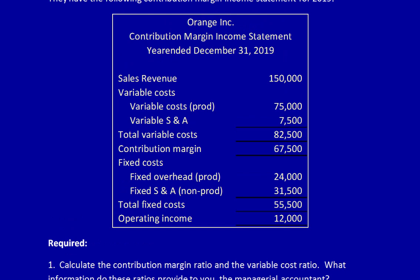When we're calculating ratios, we always use sales revenue as the denominator. Therefore, if I want the percentage of sales revenue in comparison to sales revenue, I would take 150,000 divided by 150,000 and multiply it times 100% to get the percentage, which is 100%. I need to calculate the Contribution Margin Ratio and the Variable Cost Ratio.